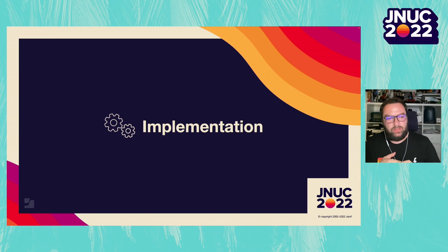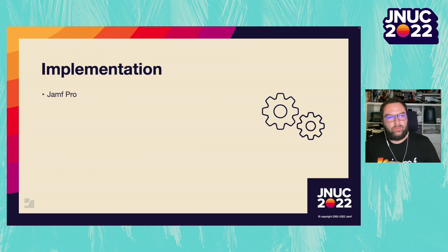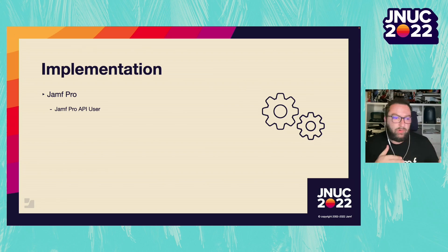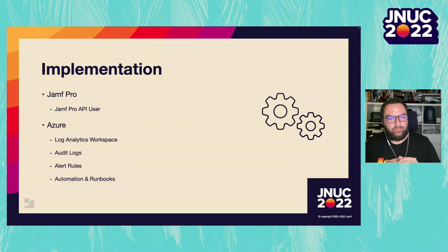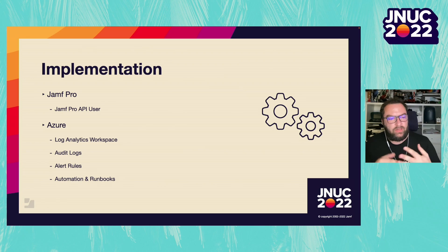Now let's talk about the implementation and the automation of everything. First, we're going to need to create a specific API user in Jamf Pro so that we can use the Jamf Pro API in a secure way. We don't want to use our admin account, because that account will be used from Azure to connect to Jamf. Then in Azure, we will create our log analytics workspace and define our audit logs, alert rules, and automation and runbooks.